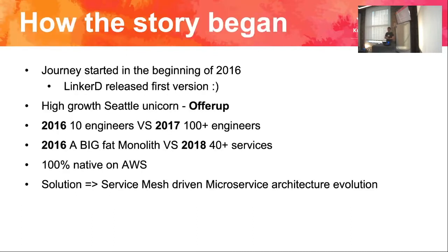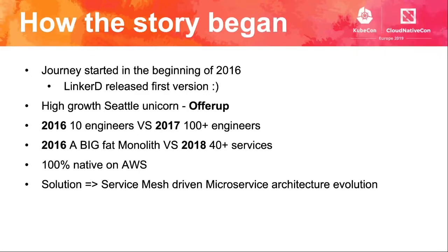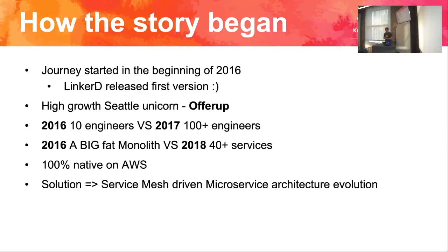This is where the journey actually started. Seattle actually has unicorn startups — it's not just San Francisco. I joined the company at the end of 2015. My mission was helping them scale from the engineering side. We had a lot of money at that point, so we were going to hire from 10 engineers all the way up to hundreds. In 2016 we had 10; by 2017 there were hundreds. And in 2016 we had a big fat monolith — if you hired more people, they just stepped on each other. It was impossible to scale. Scale comes in two parts: productivity needs to scale, and your system must not die. At that point with the big fat monolith, we were getting about five outages per week, and as we hired more people, they were just sitting on the bench stepping on each other.